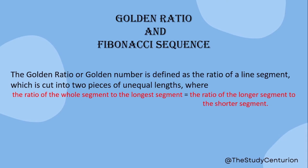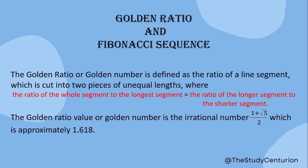Simply put, you are already aware of this concept. The ratio of the whole segment to the longest segment equals the ratio of the longer segment to the shorter segment. That value is an irrational number — it cannot be expressed as a ratio of integers. That value is 1.618.